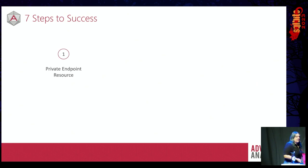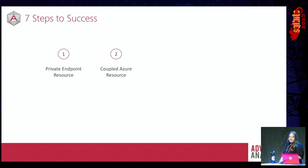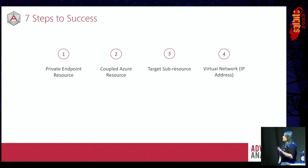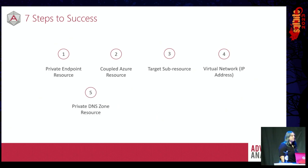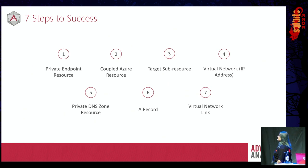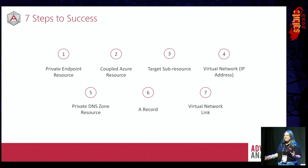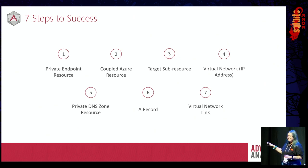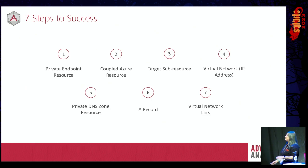I'm going to flash them up on the screen but not explain what they are because we'll go through each one individually. Step one is a private endpoint resource. Step two is a coupled Azure resource. Step three is a target sub resource. Step four is a virtual network which gives you your IP address. Step five is a private DNS zone. Step six is an A record and step seven is a virtual network link. Hopefully some of those things are familiar to you. My aim is that by the end of the talk you feel comfortable with what all seven of these things are and can go away and configure them.